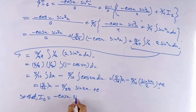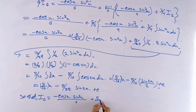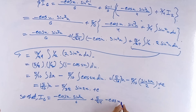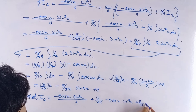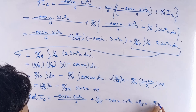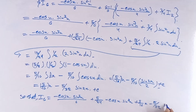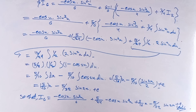So I of 6, the answer to this question, is: minus cos x times sine to the power 5x by 6, plus 5 by 24 of minus cos x times sine cubed x, plus 5 by 16 x, minus 5 by 32 sine 2x, plus c. Thank you for watching — like, comment, share and subscribe to my YouTube channel. Bye bye, have a good day.